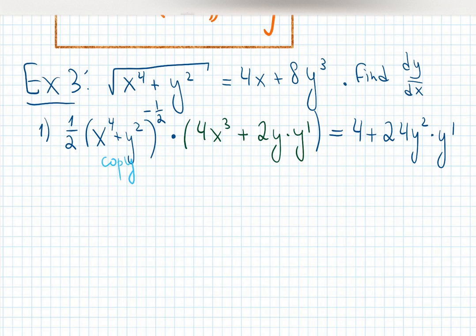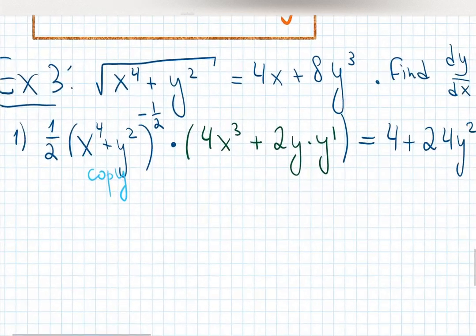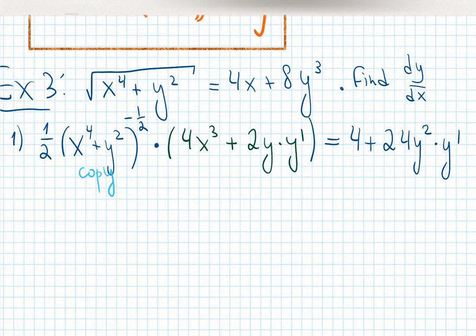Checking the right side: y squared — derivative of y is y prime, derivative of x is 1, derivative of y is y prime. That's the first step — I think the first step is the hardest one. After this, identify pieces that have y prime multiplied, collect them on one side, and everything else on the other side.